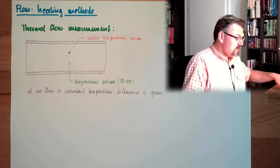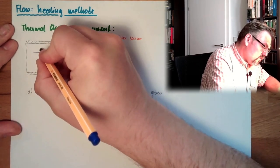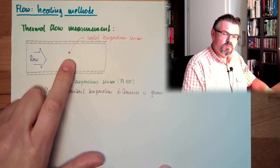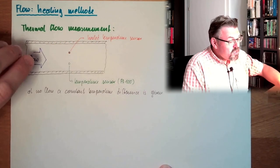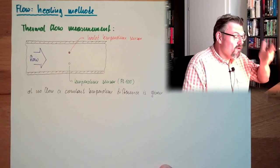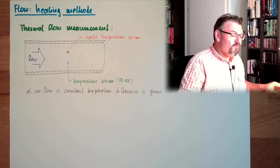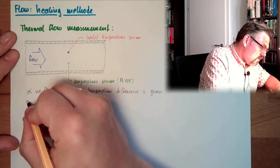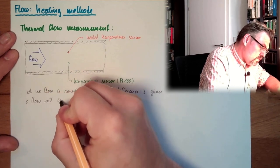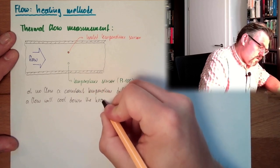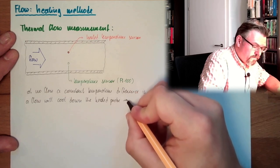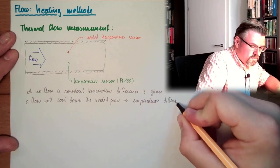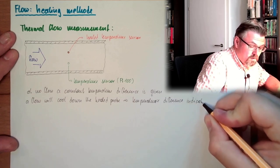Now if the flow starts, the direction of the flow doesn't really matter. So here we have the flow. The flow will cool down this probe. It's heated, but since the flow is streaming around this heated temperature probe, this heated temperature sensor, this is cooled down by the medium. So a flow will cool down the heated probe. Temperature difference indicates flow speed.